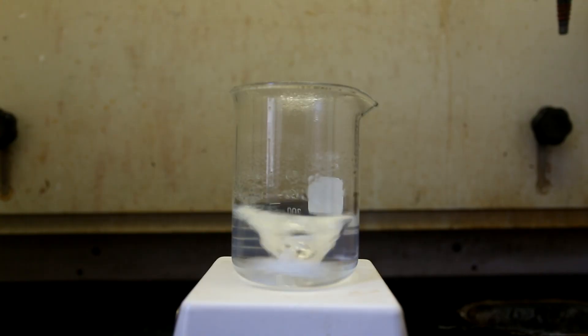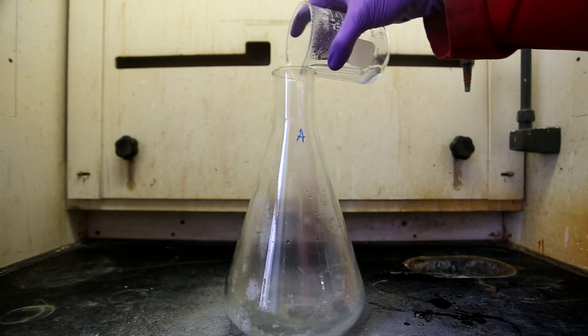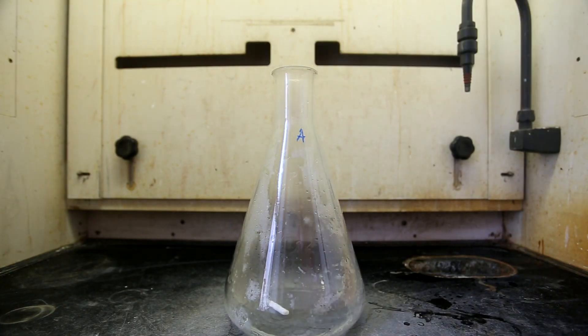Cloudiness indicates undissolved starch. Keep stirring, and keep it on heat until the solution becomes completely clear. Once the solution is cleared up, you can remove it from heat. Pour the starch solution into a suitably large container labeled A.